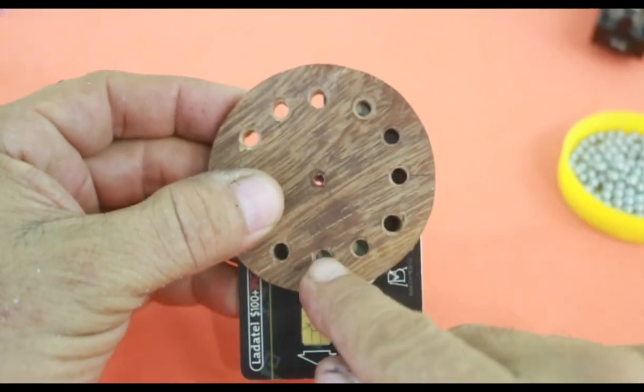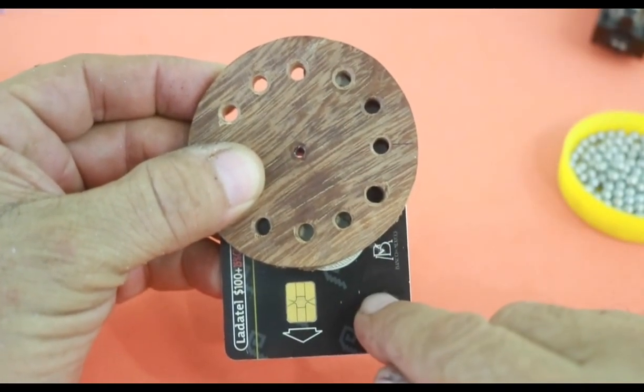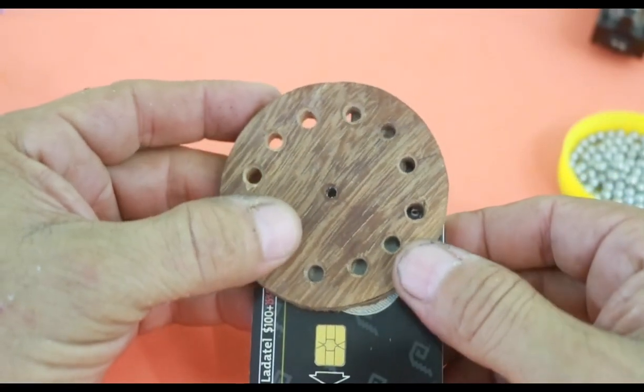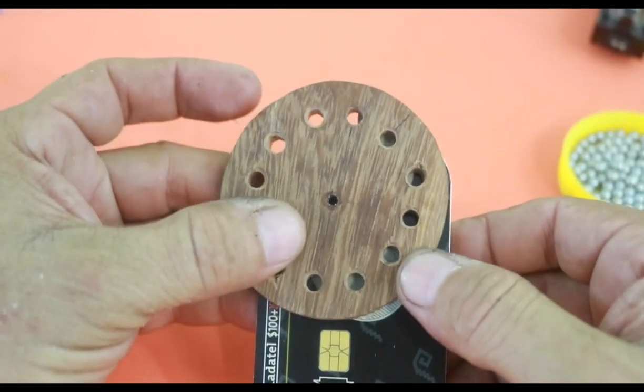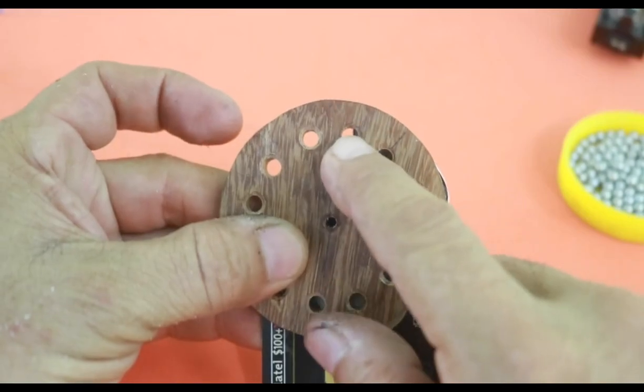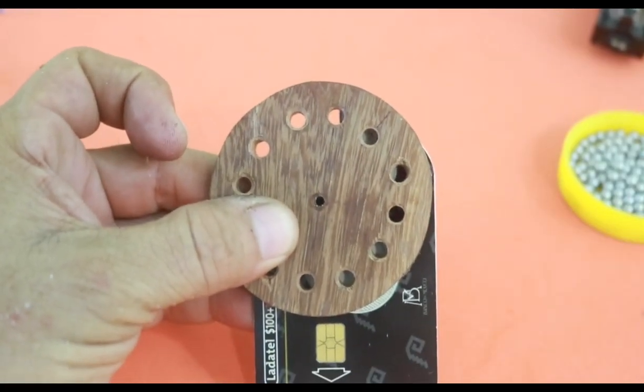When a ball enters here, it is stopped by the cards, moves to the upper side and when it reaches this point, it will fall to the other side.